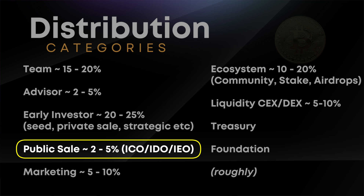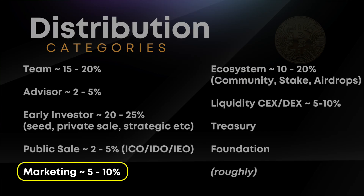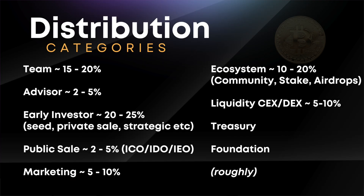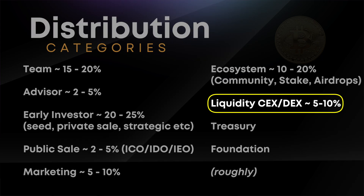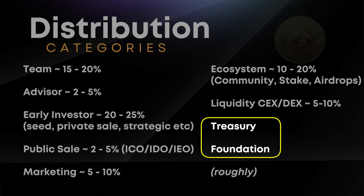Marketing typically gets 5–10%, ecosystem 10–20% (community, staking, airdrops, rewards), and then there's liquidity for centralized and decentralized exchanges like Uniswap. The treasury gets some form of allocation, and then the foundation may also receive a percentage of tokens.